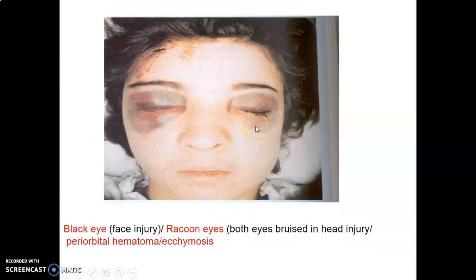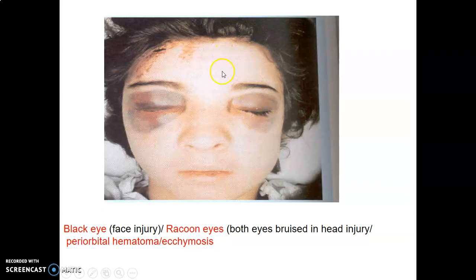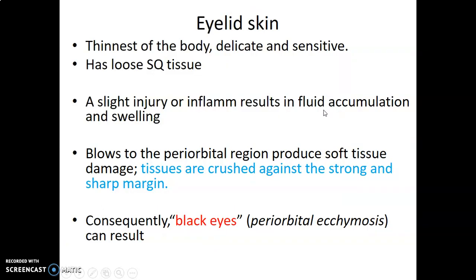The black eye seen in facial injury is also called raccoon eyes, periorbital hematoma, or periorbital ecchymosis. In head injury, bleeding in the scalp spreads to the eyelid because the frontalis and occipitalis fibers mingle with the orbicularis oculi and the frontalis does not attach to bone. The skin of the eyelid is the thinnest skin in the body with loose subcutaneous tissue, so fluid accumulates easily. A blow to the periorbital region crushes soft tissue against the sharp supraorbital margin, causing the black eye appearance.